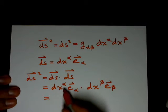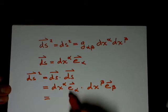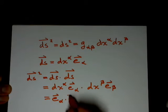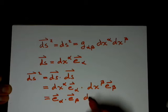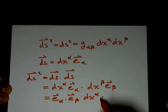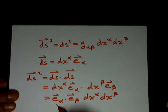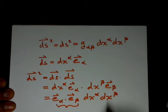And these are scalars, so it doesn't matter, we can move them around. And right here, this is your metric, the e sub alpha dot e sub beta, well this defines your metric components.